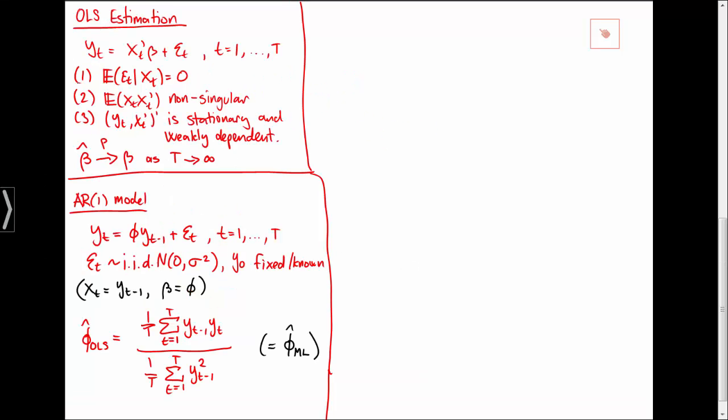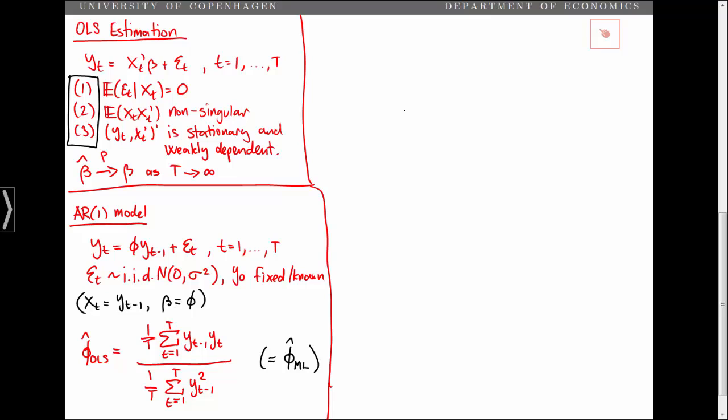Next, what we want to do is to show that the autoregressive model satisfies the three conditions for establishing consistency of our OLS estimator. We will throughout assume that the true value of phi is numerically less than 1 such that our data generating process is stationary.